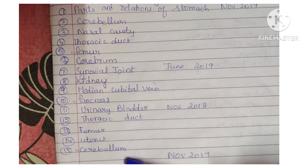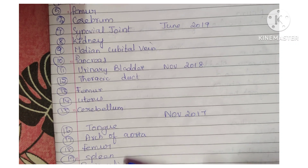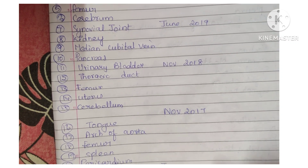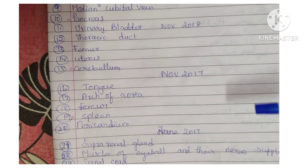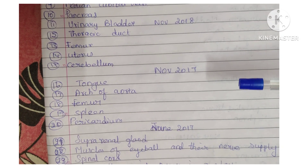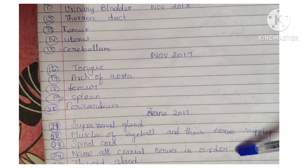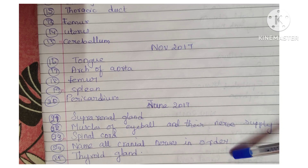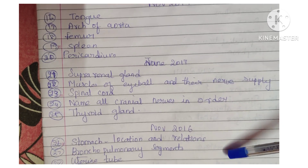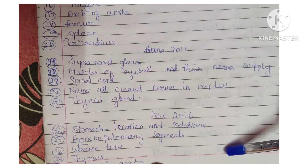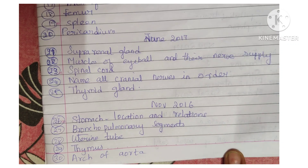Continuing anatomy topics: uterus, cerebellum, tongue, arc of aorta, femur, spleen, pericardium, suprarenal gland, muscles of eye wall and their nerve supply, spinal cord, name all cranial nerves in order, thyroid gland, stomach location and its relations, bronchopulmonary segments, uterine tube, thymus, and arc of aorta.